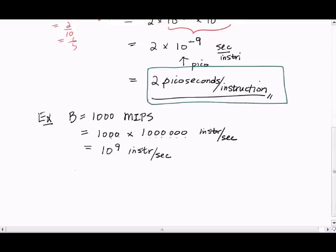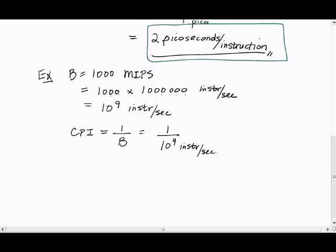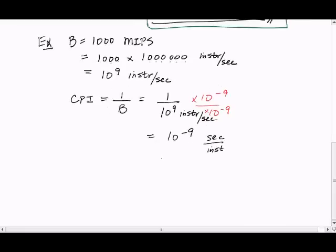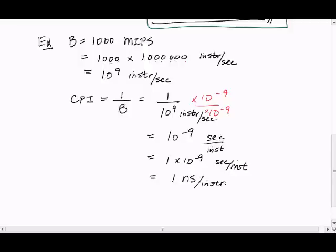So our cycles per instruction is equal to 1 over our bandwidth, which is 1 over 10 to the 9 instructions per second. So if we multiply top and bottom by 10 to the minus 9, we get 10 to the minus 9 seconds per instruction. So 10 to the minus 9 is the same as 1 times 10 to the minus 9, which is the same as 1 nanosecond per instruction. So this is our answer.